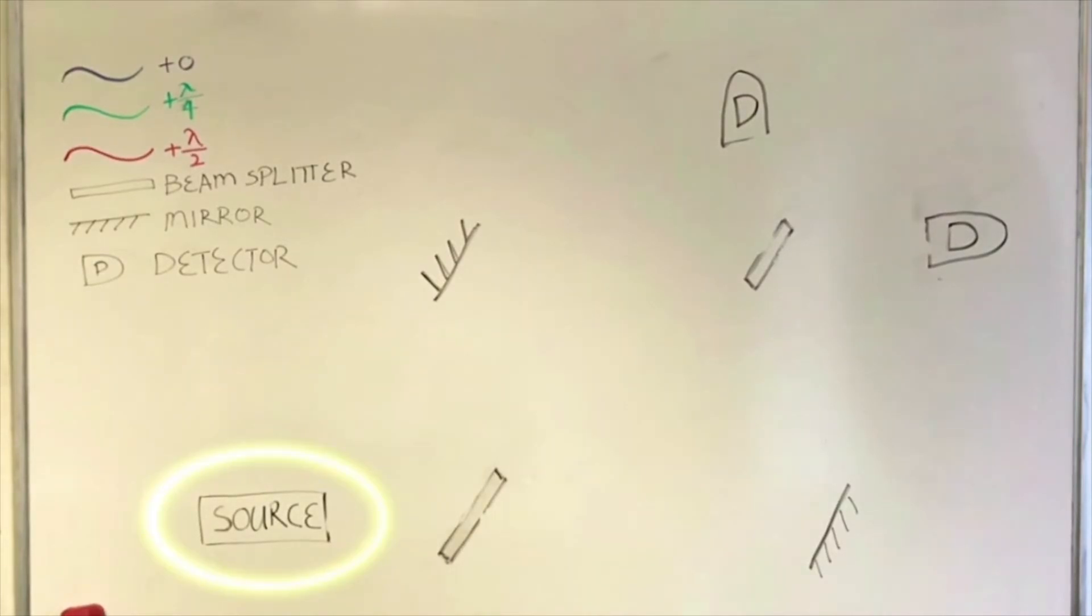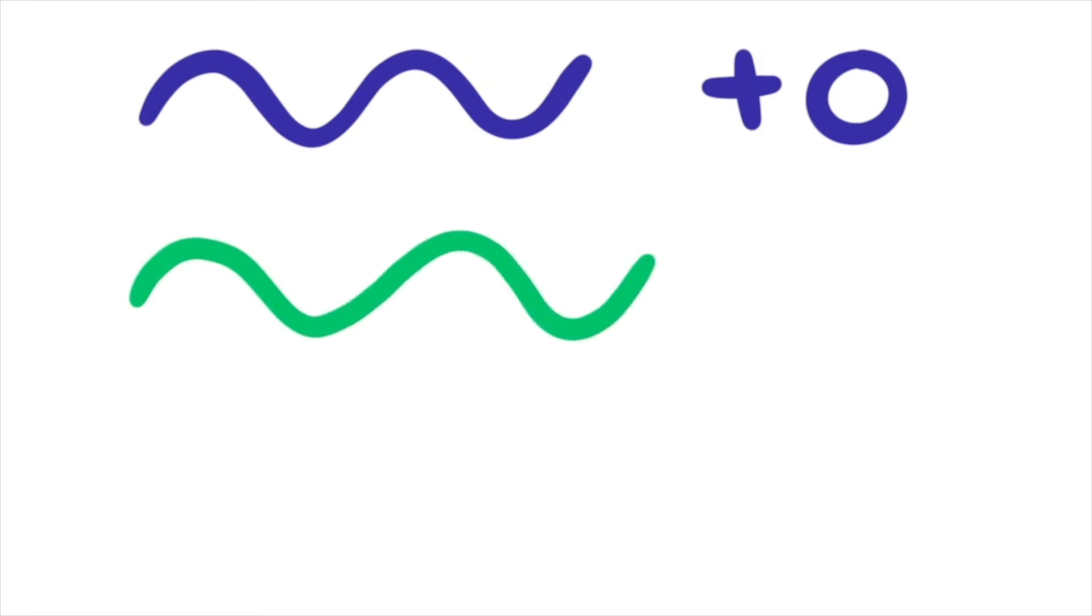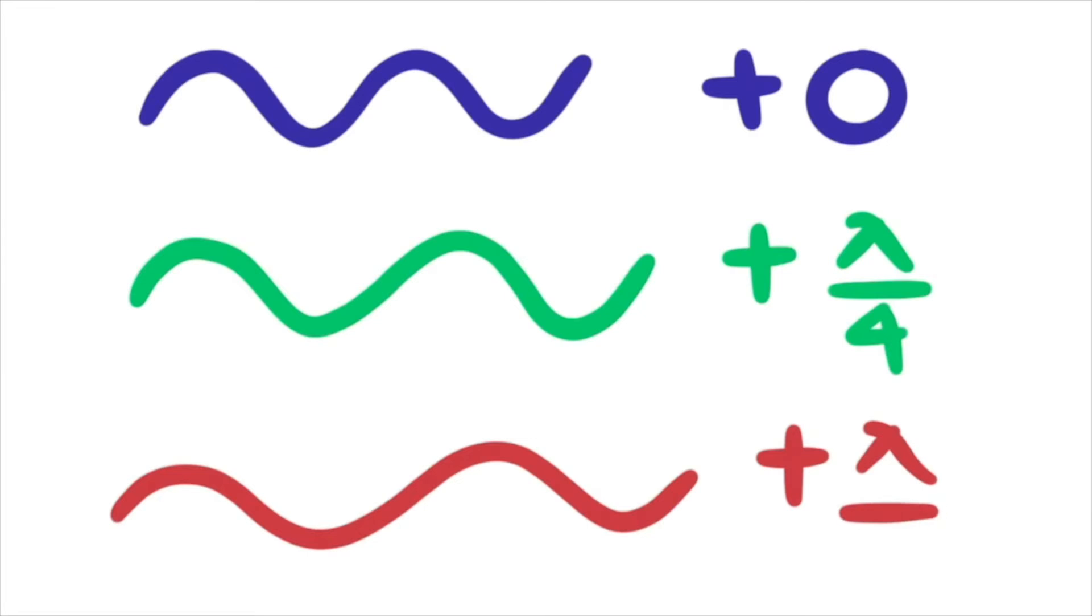With one light source, two beam splitters, two mirrors and two detectors. In this drawing, the wave with no phase shift will be colored blue. The wave with a quarter wavelength of phase shift will be green, and the wave with half a wavelength of phase shift will be red.